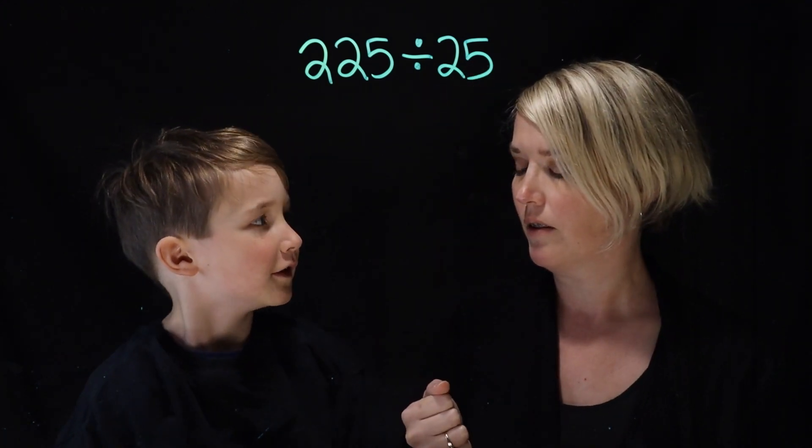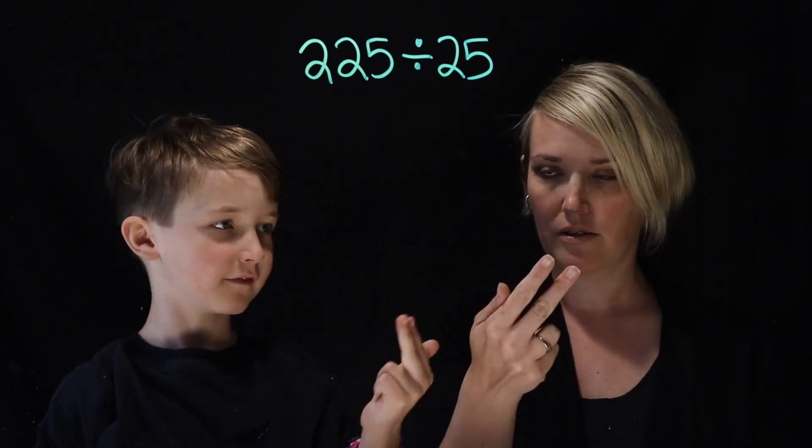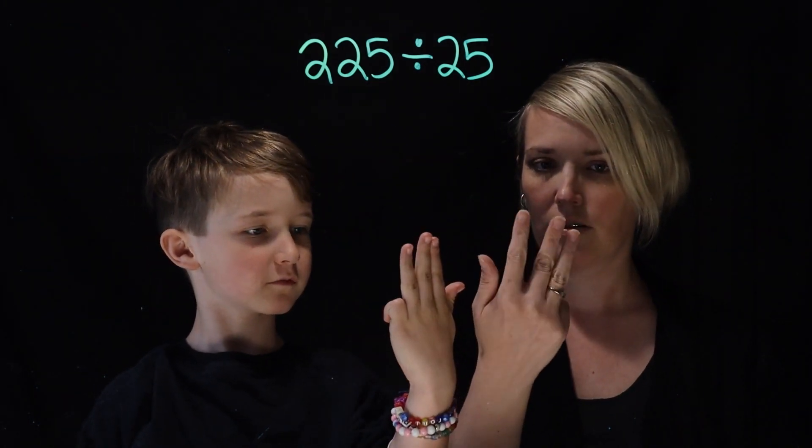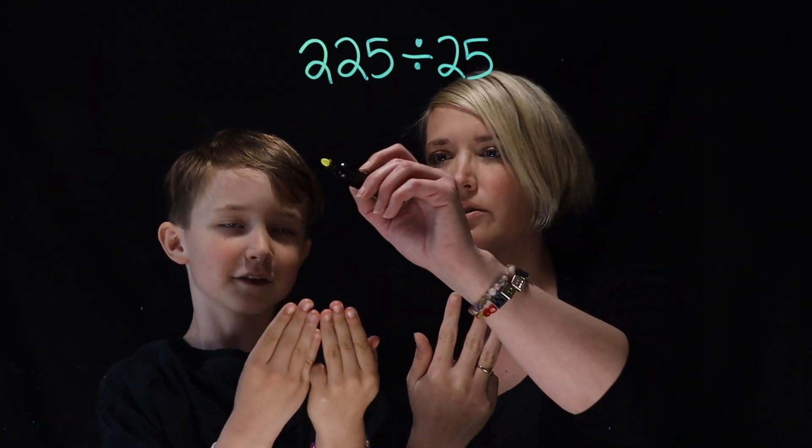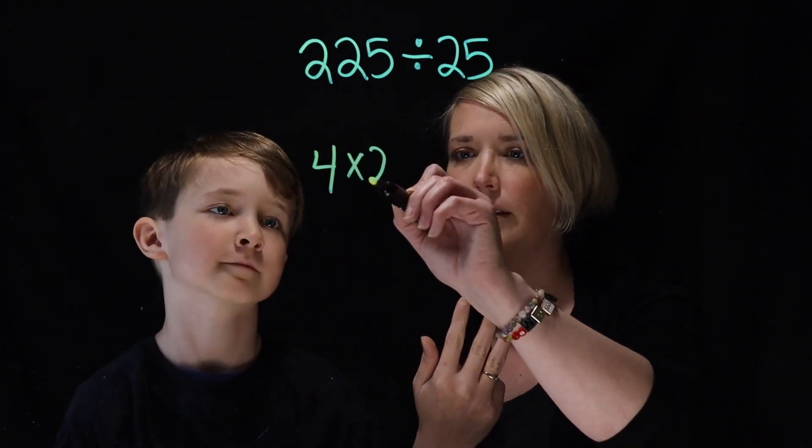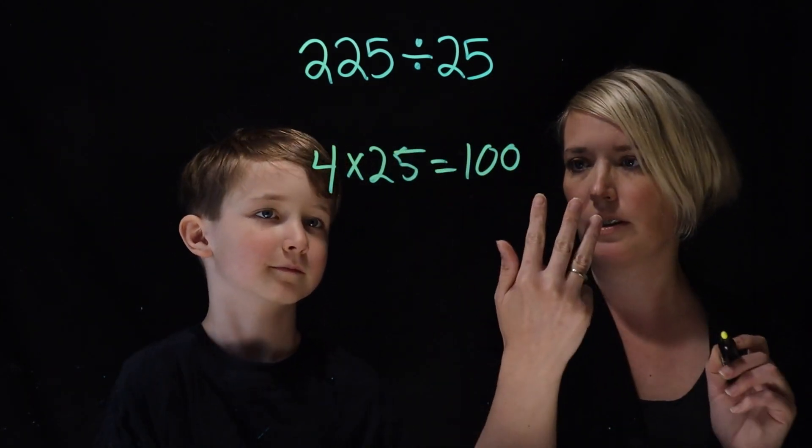Okay. So 25, 50, 75, 100. So four times 25 is 100. Okay. Here, let me write it down. So four 25s would give you 100. Yes. And you did it like that.